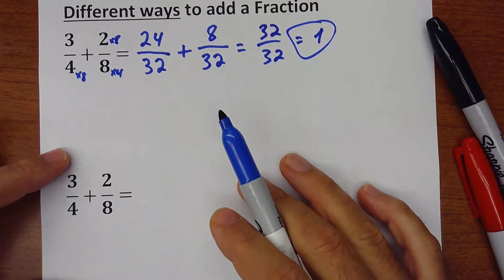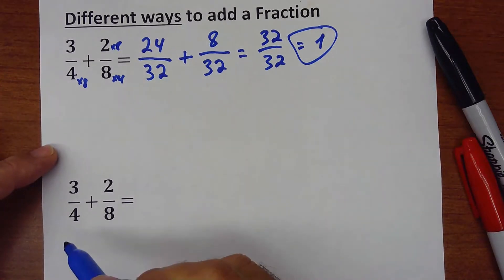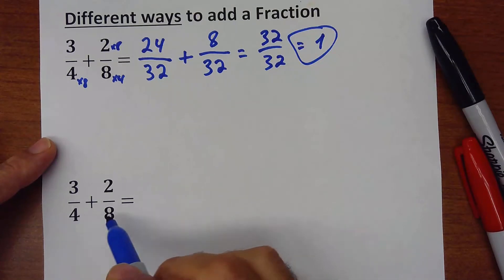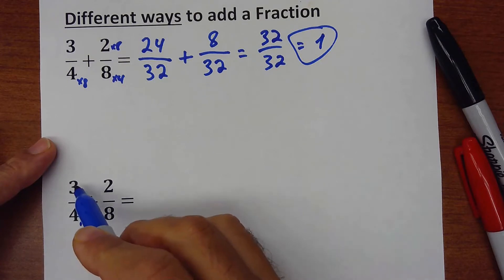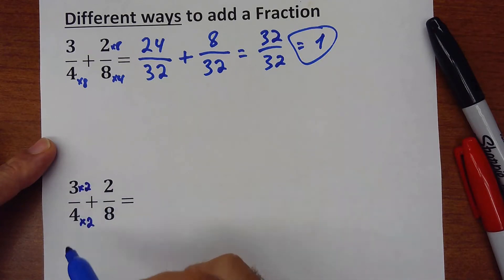Another method, which I consider a better one, is just multiplying the 4 by a number that gives me 8. Because at the end what I want is to have two denominators the same. So if I just do 4 times 2, I multiply the 3 by 2 also, so I have my goal, which is to have the same number in the denominator.